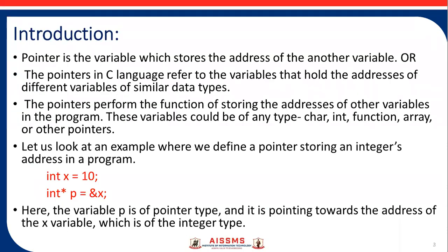What is a pointer? A pointer is the variable which stores the address of another variable. Or, the pointers in C language refer to the variables that hold the addresses of different variables of similar data types. The pointers perform the function of storing the addresses of other variables in the program. These variables could be of any type - character, integer, function, array, or other pointers.